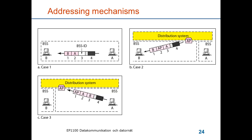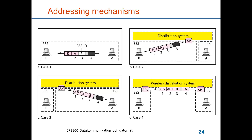Finally, there is a case where all four addresses are used. This illustrates a frame being sent from one basic service set through an access point that communicates with another access point via a wireless distribution system. Here, the source address of A is in field 4, the ID of access point 1 is in field 2, the address of access point 2 in the wireless distribution system is in field 1, and the ultimate receiver B is in field 3. These four cases are indicated by two bits in the frame control field.